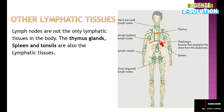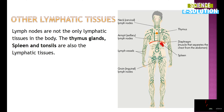Lymphatic nodes act as lymphatic tissue, but apart from them, the thymus gland, spleen, and tonsils are also lymphatic tissues. As you can see clearly in the diagram, lymph nodes are present in various parts of the upper body and also in some parts of the lower body, especially near the groin area. So the main lymphatic tissue is the lymph node, but the thymus gland, spleen, and tonsils also act as lymphatic tissues.